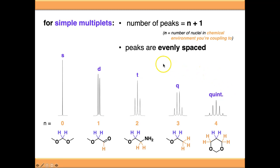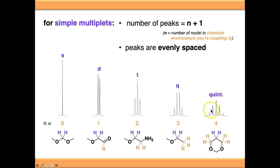The important thing to note is that the peaks are evenly spaced in a simple multiplet. The doublet only has one gap, but for triplets and beyond, the gap between the left and middle peak is exactly the same as the gap between the middle and right peak. For a quintet, all four gaps are the same size, and that will become important later.